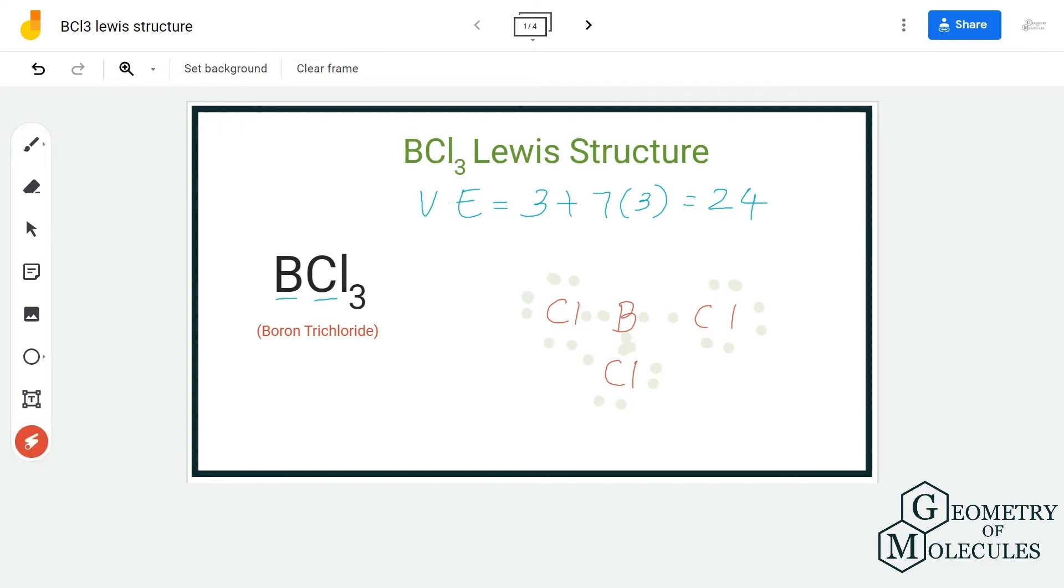But that is fine. It can do away with an incomplete octet because when you try to complete its octet by shifting a pair of electrons from this chlorine atom or from this chlorine atom, the formal charge on the boron atom increases.